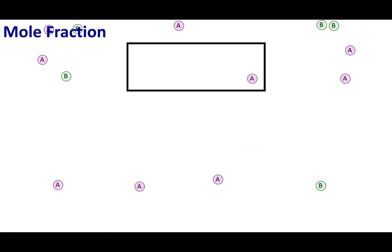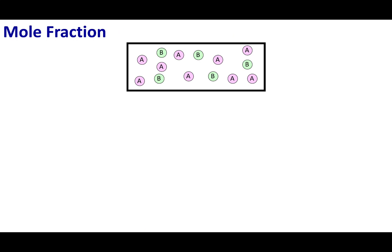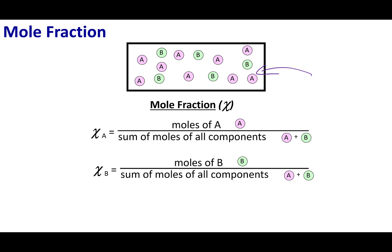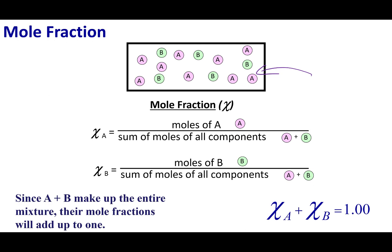When we talk about partial pressures, it's useful to talk about concentration using another way to express it — the mole fraction, abbreviated with the uppercase chi symbol. Mole fraction equals the moles of what you're interested in over the sum of all the moles in the container. For example, the mole fraction of A is the moles of A divided by the moles of A plus B. Similarly, the mole fraction of B is moles of B over total moles. If you add up all the mole fractions, they should equal 1: mole fraction of A plus mole fraction of B equals 1.